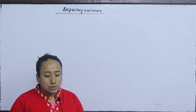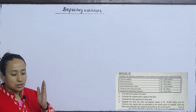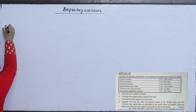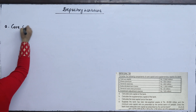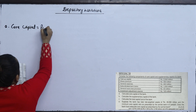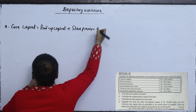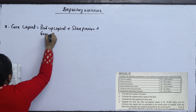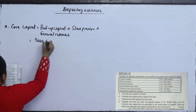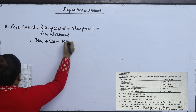The first requirement is to calculate the core capital of the bank. Core capital equals paid-up capital plus share premium plus general reserves. Paid-up capital is 2000 million, share premium is 200 million, and general reserves is 400 million.